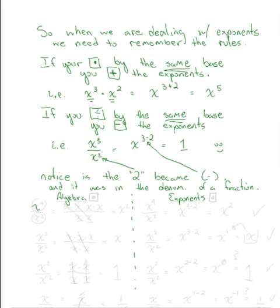I'm going to take what we know from algebra on one side and create the exponent rules to match on the other side. Starting with x to the 4th over x squared: expanding it out gives x times x times x times x, all over x times x. Since x over x is 1, that cancels twice, leaving x times x, which is x squared. Using the exponent rule, x to the 4th over x squared equals x to the 4 minus 2, and 4 minus 2 is 2 — so those two answers match.